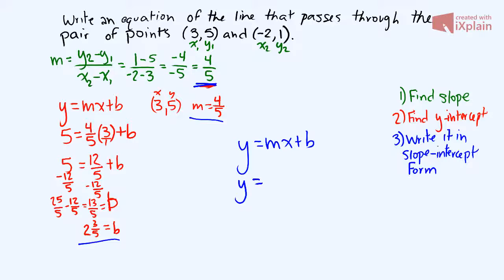Our slope, which is 4/5, our x, which is the corresponding coordinate with our y, so we leave that as x, plus this 2 and 3/5.